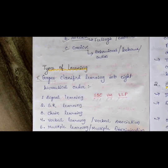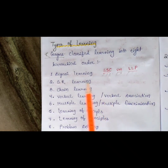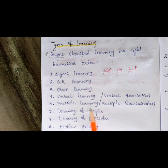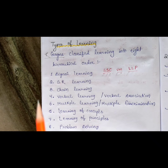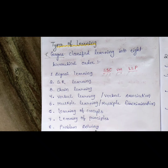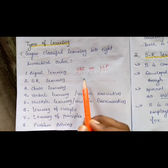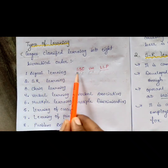Robert Gagné classified learning into eight hierarchical types: signal learning, SR learning, chain learning, verbal association, multiple discrimination, learning of concept, learning of principles, and problem solving. To remember these, use the shortcut: S for signal, S for SR, C for chain, V for verbal association, M for multiple discrimination.